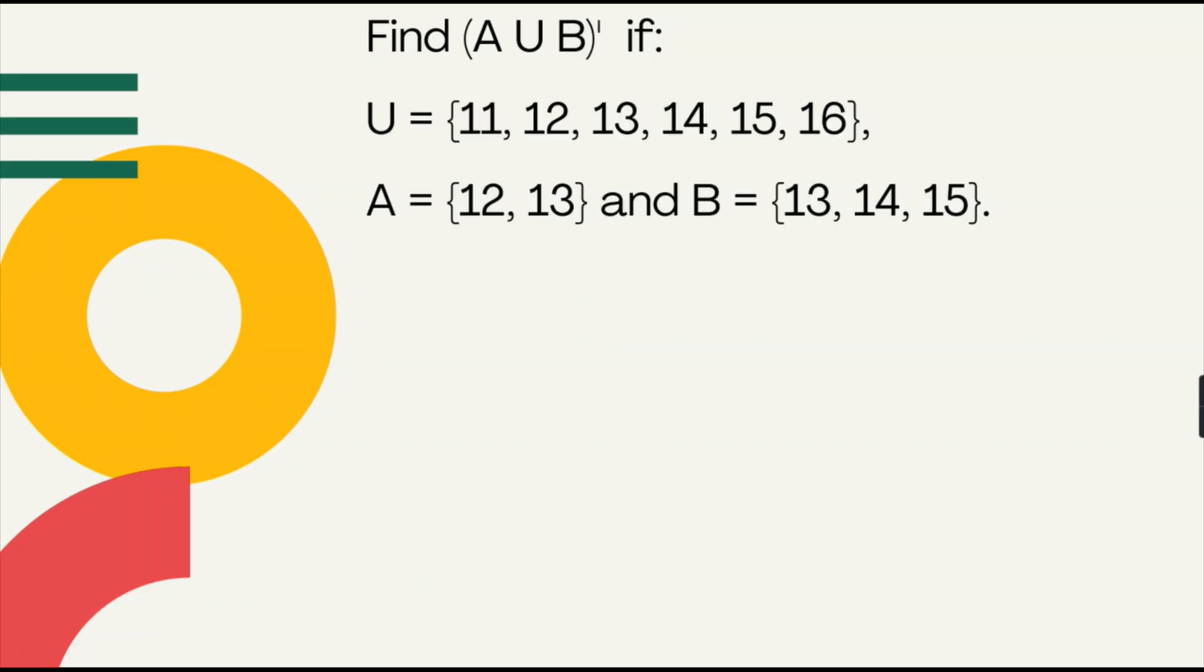Next one. Find the A union B complement if the set U includes 11, 12, 13, 14, 15, and 16, while set A includes the elements 12 and 13, and set B includes 13, 14, 15.